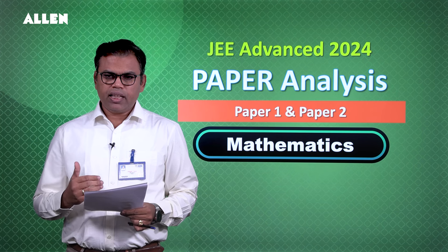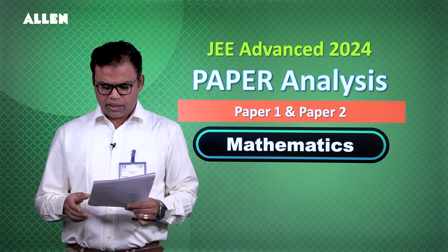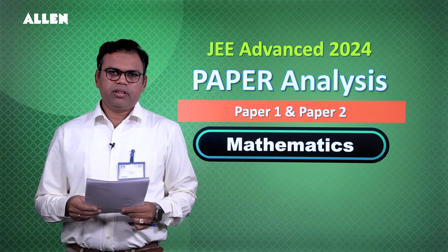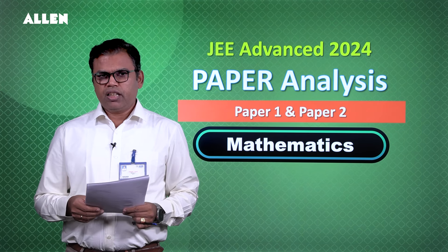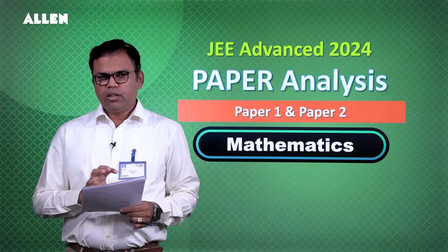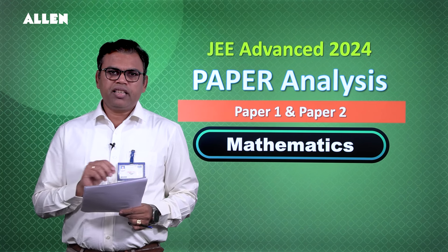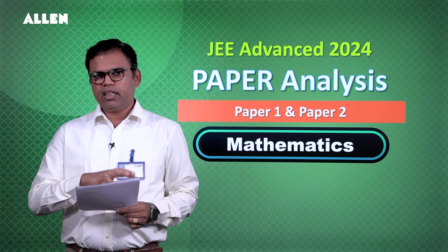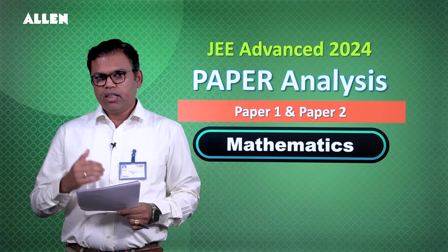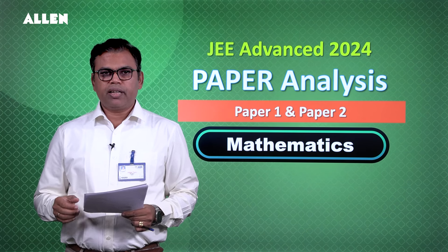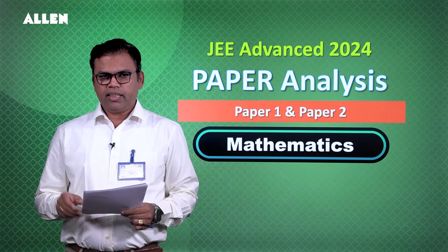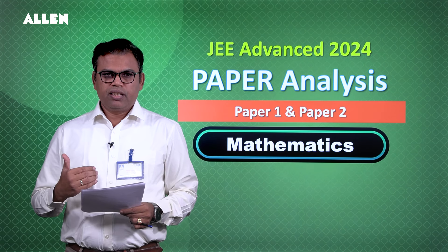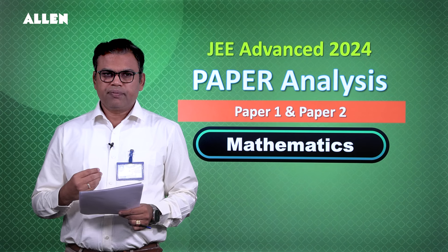Looking at difficulty distribution: roughly 20-22 questions fall in the easy category, 10-12 questions in the moderate category, and around 8 questions in the tough category. So overall the paper would be called moderate. The easy questions were easy but tricky, and some moderate questions were lengthy in calculation. However, compared to last year, calculations were slightly less. Students had to spend time comprehending questions due to the set theory and abstract mathematical language used, but once understood, solving was much easier.